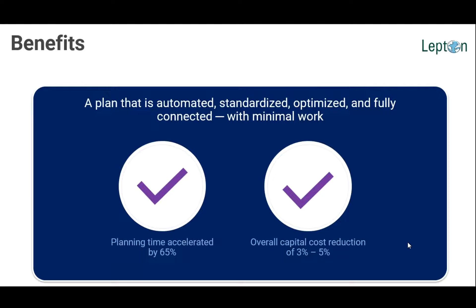The benefits of this solution include reducing the time it takes to produce a design. It accelerates the whole planning cycle and reduces it by 65 to 70 percent — something that happens in days is reduced to hours or minutes. Because it works so fast, you can do multiple iterations, producing the most optimal design. It uses optimization mechanisms to ensure all capacity is connected in the right way with the lowest cost possible, thus reducing the total capital expenditure required to build the network.